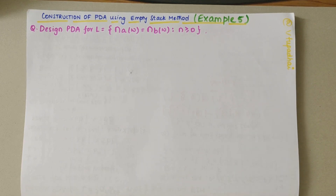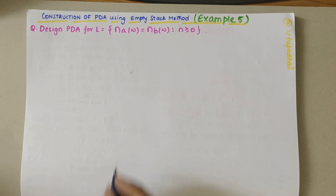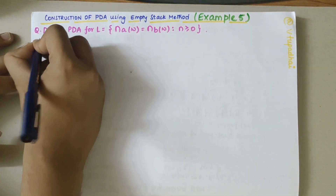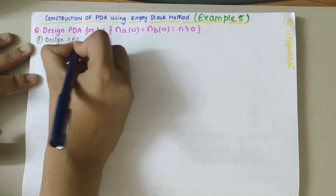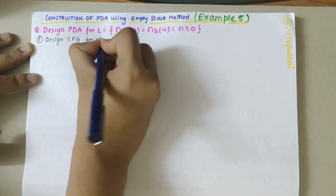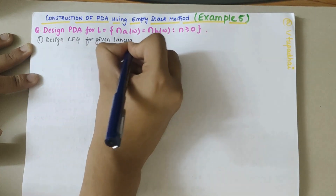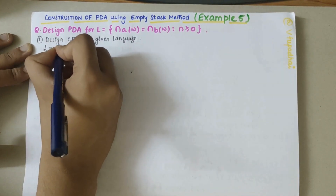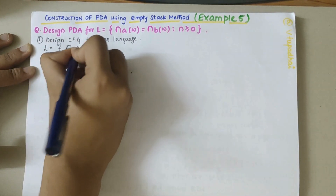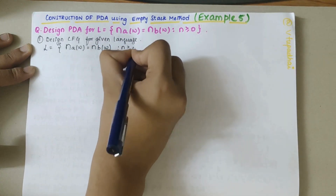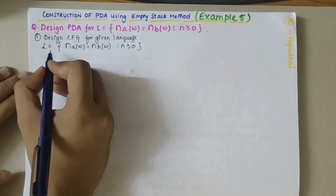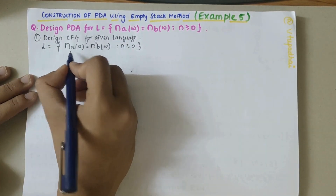In this video we'll be looking into construction of a PDA using the MTStack method. This is the fifth example. The problem statement says to design a PDA for the given language using the MTStack method. The first step is to design a CFG for the given language. The language is L = {w : N_A(w) = N_B(w)} where N should be greater than or equal to zero.